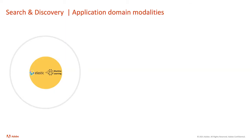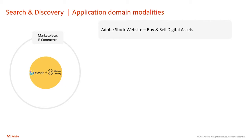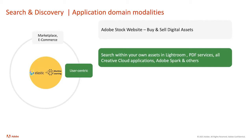Now, to understand the complexity of search and discovery, it's important to understand the modalities and scope. The first is application domain modalities. The search and discovery platform is not just powering e-commerce use cases — it has many other domains. Starting with marketplace: Adobe Stock, which you can consider the eBay of buying digital assets. The search and discovery experience throughout is powered by this platform.